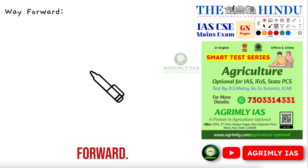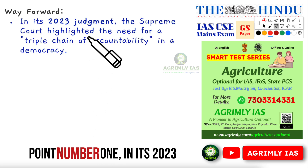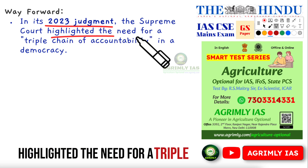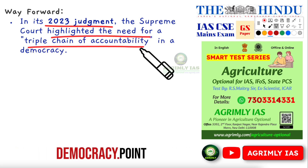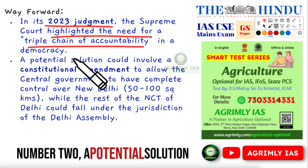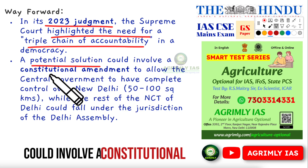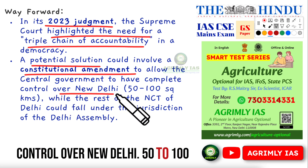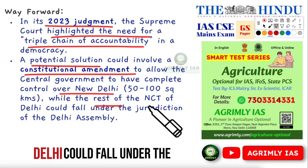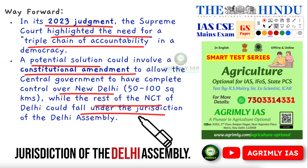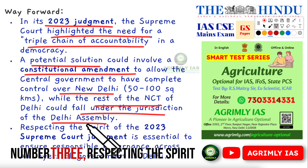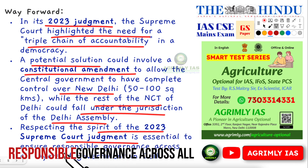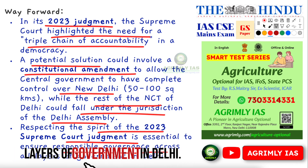The third part of the answer is the way forward. Point one: In its 2023 judgment, the Supreme Court highlighted the need for a triple chain of accountability in a democracy. Point two: A potential solution could involve a constitutional amendment to allow the central government to have complete control over New Delhi (50 to 100 sq. km), while the rest of the NCT of Delhi could fall under the jurisdiction of the Delhi Assembly. Point three: Respecting the spirit of the 2023 Supreme Court judgment is essential to ensure responsible governance across all layers of government in Delhi.